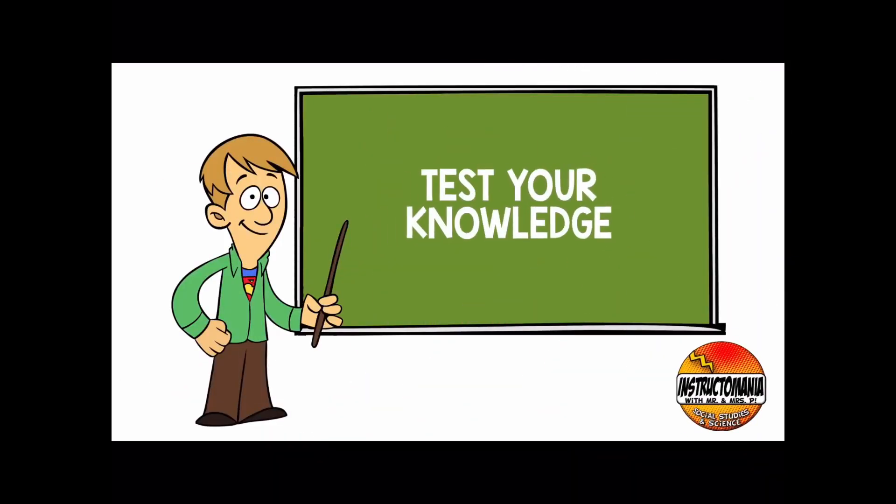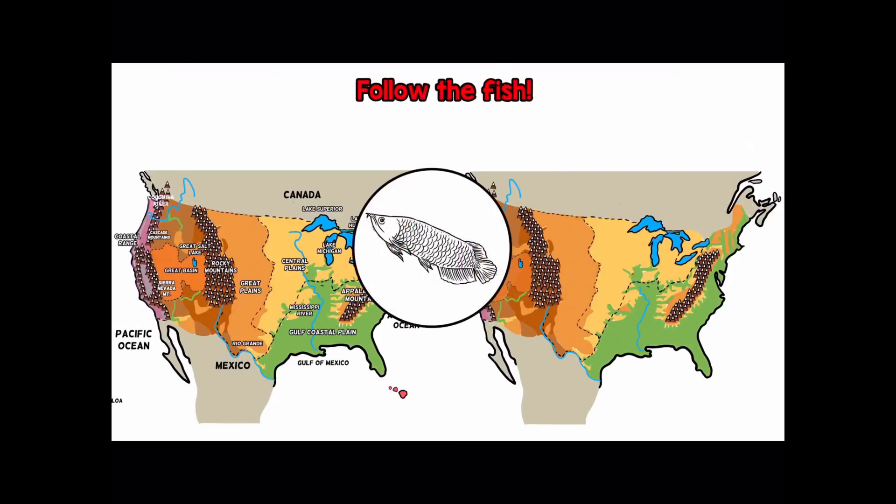Test your knowledge. Let's play Follow the Fish. In this game, you will track the fish as it appears on a blank map of the United States. Once the music stops, you will use a map of the United States labeled with physical features to determine where the fish ended up. Other animals may appear on the map, so don't forget to keep your eyes on the fish.